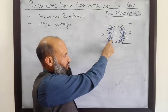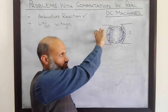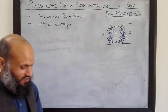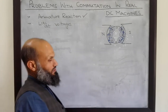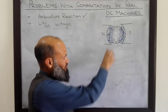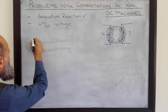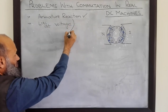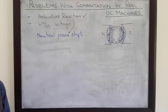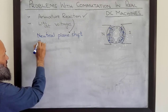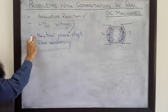This magnetic field due to current in the coils will interact with the main magnetic field and will distort the original magnetic field. Due to the distortion in the original magnetic field, there are two effects: the first one is the neutral plane shift, and the second one is flux weakening. Let's first talk about neutral plane shift.